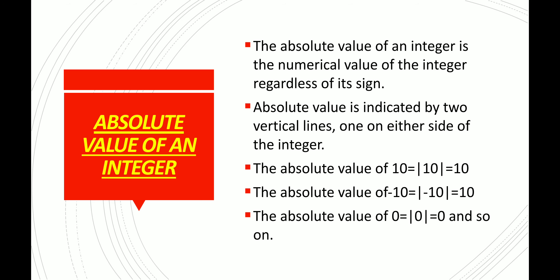Absolute value is indicated by two vertical lines, one on either side of the integer. For example, the absolute value of 10, written within two vertical lines, is equal to 10. The absolute value of minus 10 is equal to 10. The absolute value of 0 is 0, because 0 is neither a positive integer nor a negative integer.